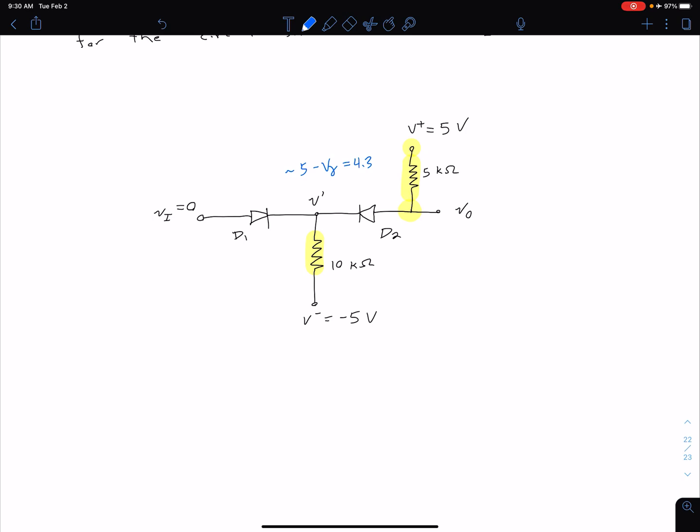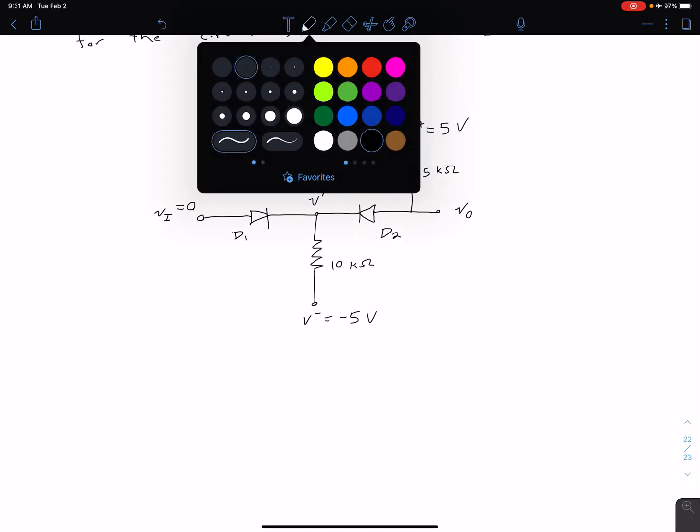So now if we look at D1 we see that it has 0 on this side and 4.3 on this side, again roughly, so we can say that D2 is probably going to be off. Okay so let's make that our first assumption, analyze the circuit, and then we need to check that assumption.